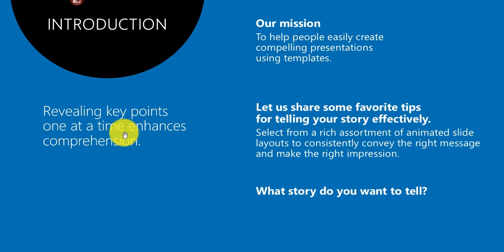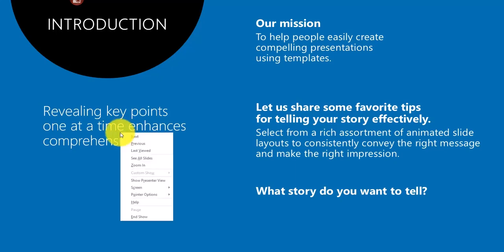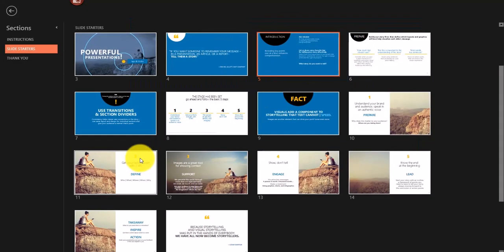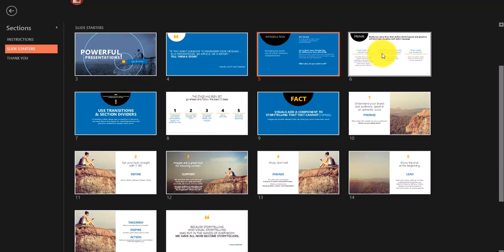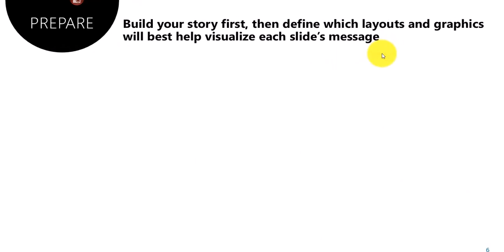You can also view thumbnails of all your slides during a slideshow. Right-click and select See All Slides. Thumbnails will appear and the slide you were on will have a red border. You can return to the slideshow by clicking the left arrow, or jump directly to another slide by clicking its thumbnail.